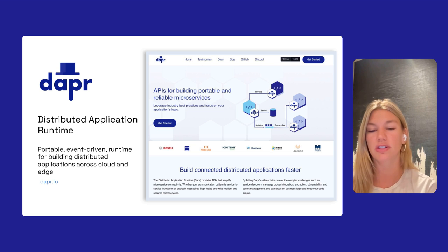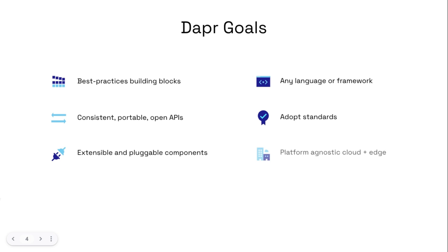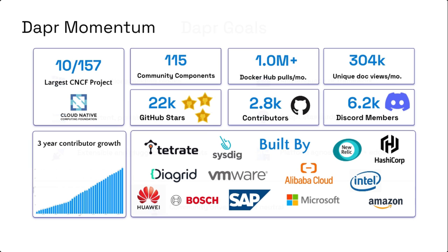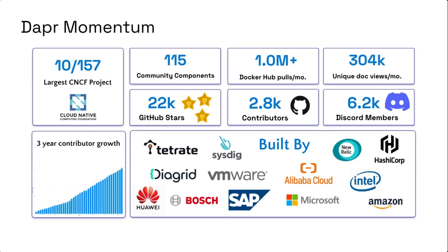Dapr's goal is to codify the best practices for building microservice applications through an open and independent API model called building blocks. These building blocks allow developers to build portable applications that are language and framework agnostic. Because building block APIs are completely independent, developers can use one, some, or all of them. Dapr is community-driven and vendor-neutral — now the 10th largest CNCF project out of 157, with over 2,800 contributors on GitHub and an active community on Discord.